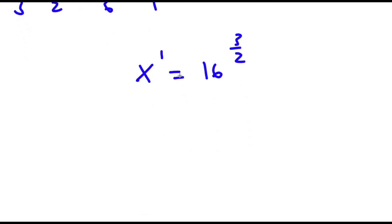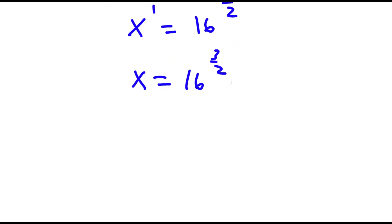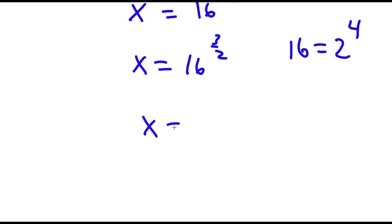Now x to the power of 1 is the same thing as x, so I have x is equal to 16 to the power of 3 over 2. Now to simplify this, 16 is the same thing as 2 to the power of 4. So now I have x is equal to 2 to the power of 4, to the power of 3 over 2.